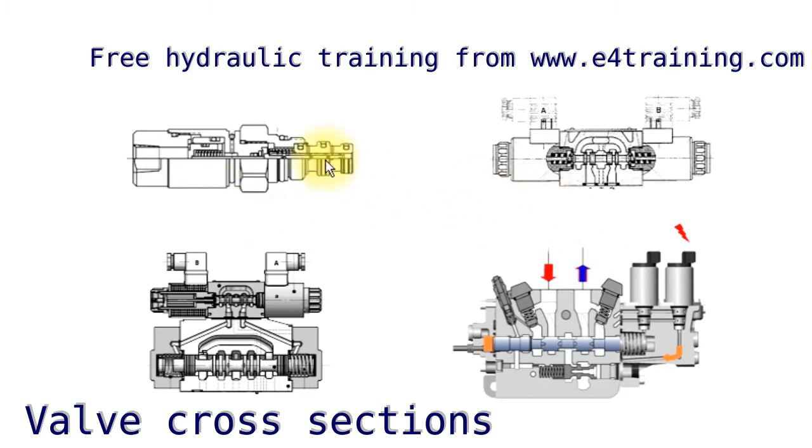So these are what they look like. We can have a cartridge insert, so this fits into a manifold, special manifold. Our C top valve, very common size six C top valve. If we look we can see the spool here, it's got very straight edges so it's either open or closed.